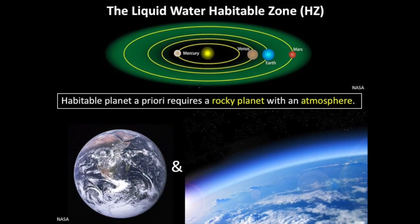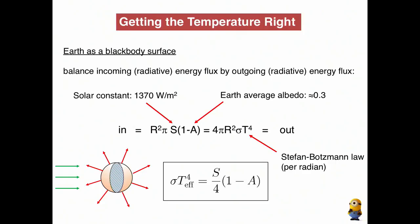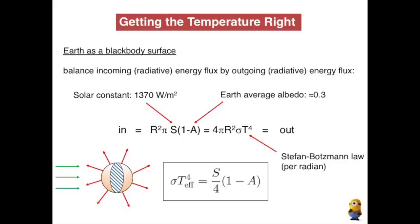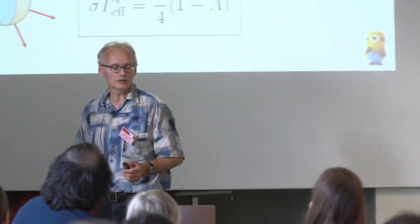We look for liquid water — not water vapor, not water ice — on a solid surface. We need an atmosphere too; that's often forgotten. You cannot put liquid water on the Moon — it doesn't work, we need pressure. In equilibrium, the Sun shines on the planet, and the planet radiates back in the infrared. What's coming in gets out in equilibrium.